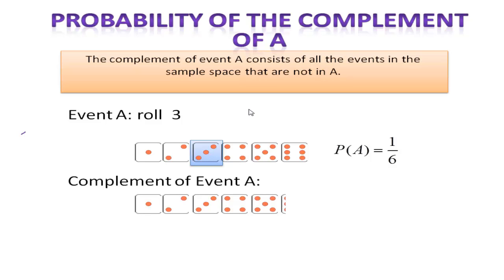So the complement of event A would be rolling all the other numbers except 3. And if I ask you for the probability of the complement of A, which is the probability that I roll a number that is not 3, then you would say it's 5 out of 6.